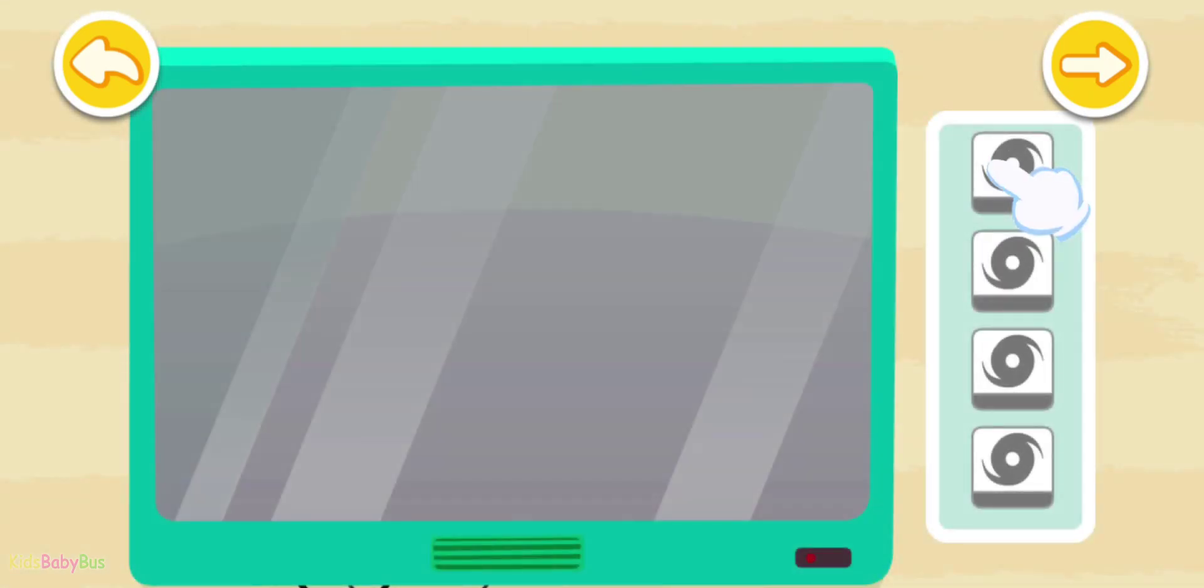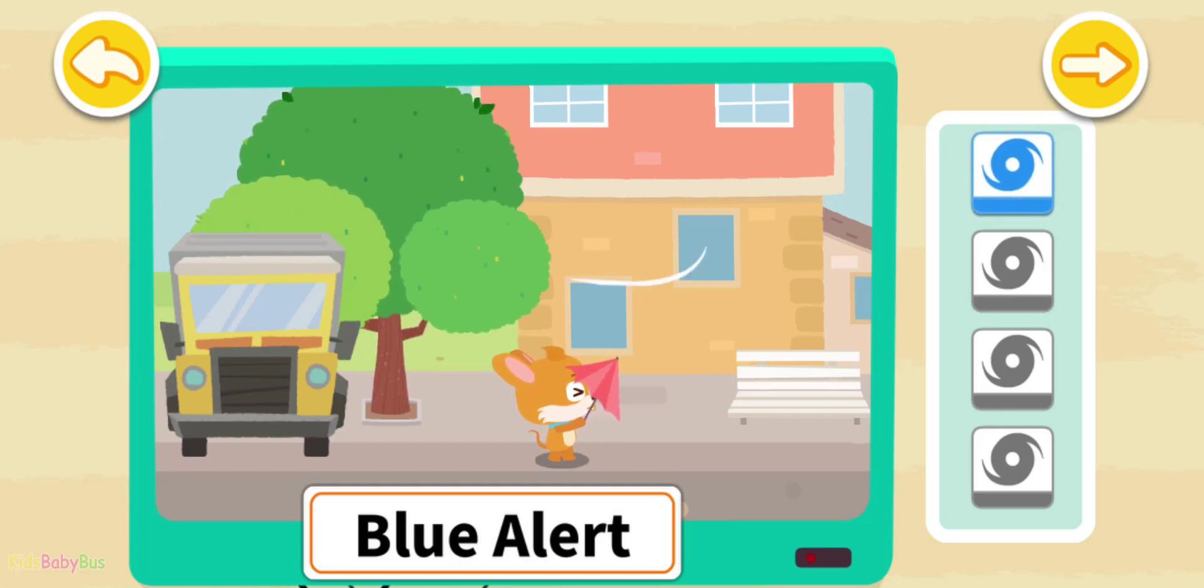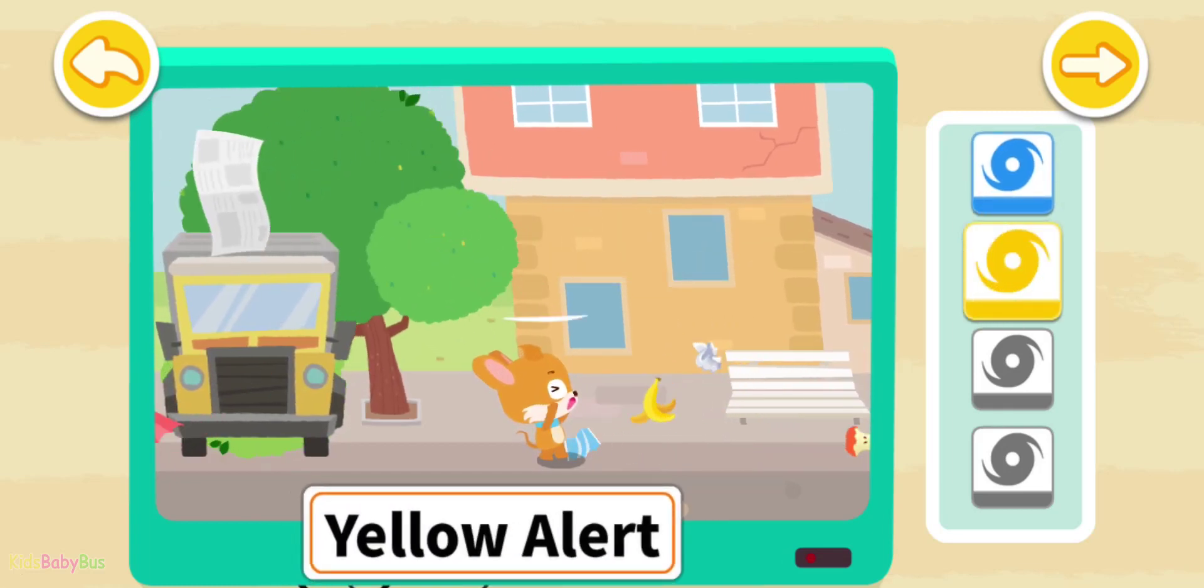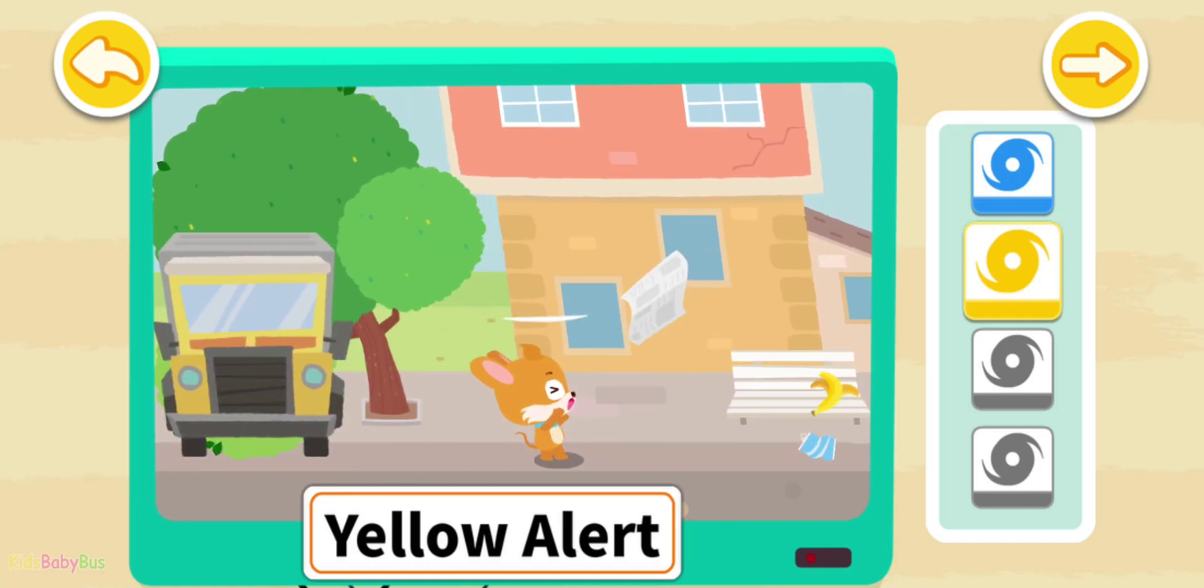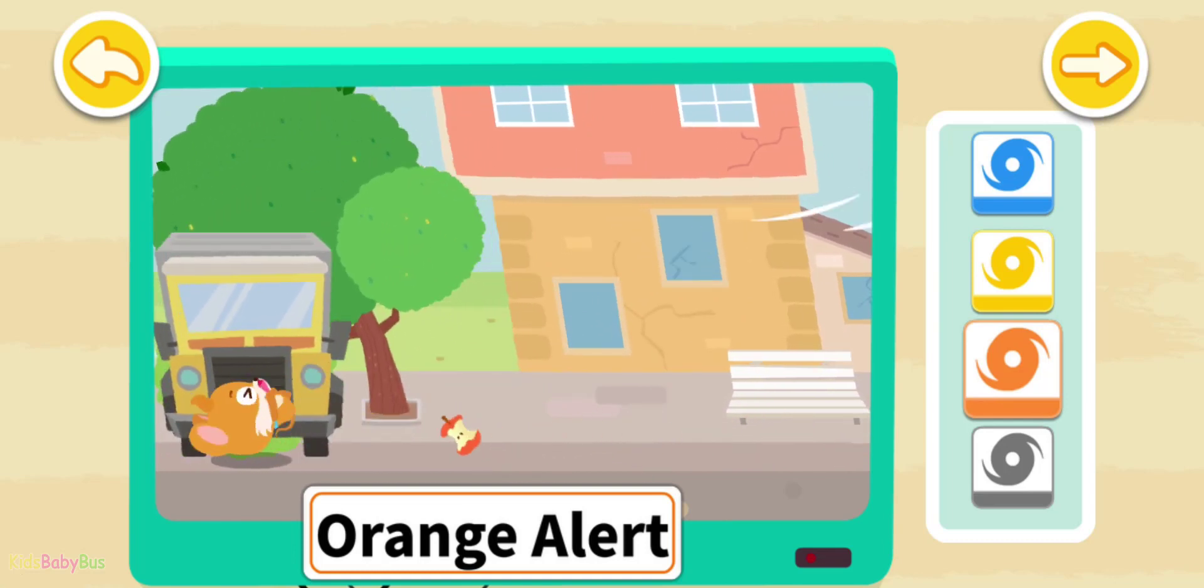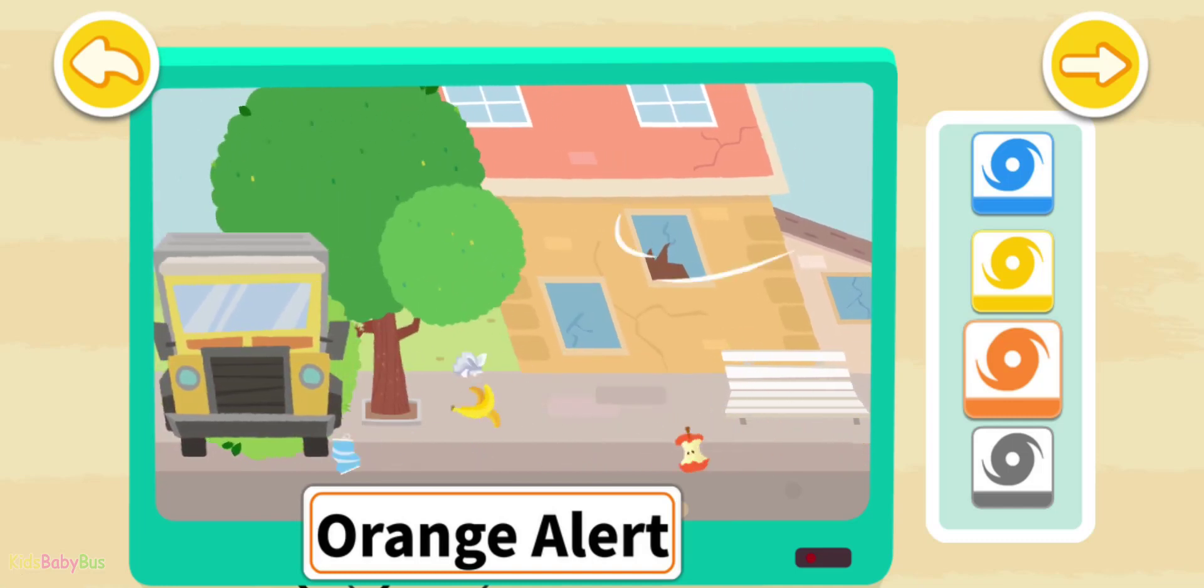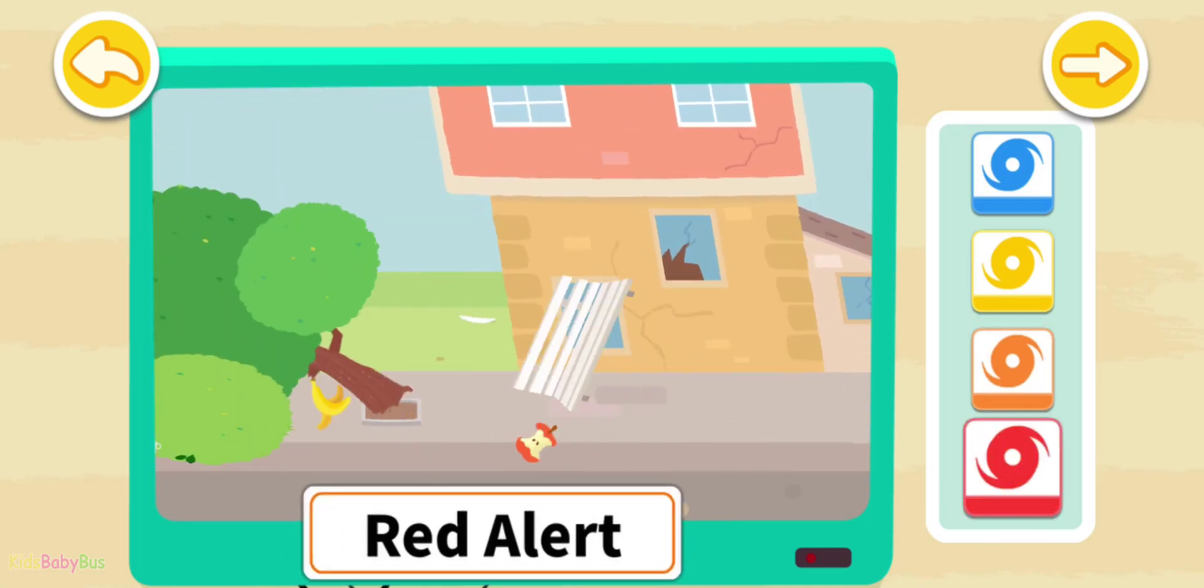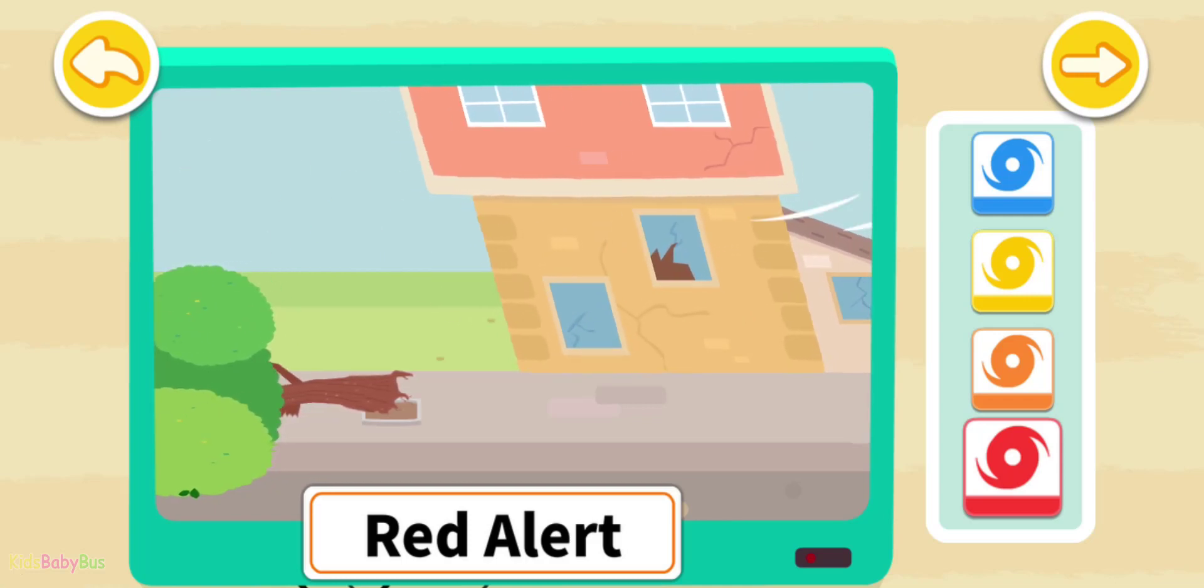Next, let's learn about hurricane warning signals. The blue alert means that walking outside can be difficult. The yellow alert means that the wind can stop you walking forward, and branches can be blown off. The orange alert means that you will be blown away if you go outside, and the window may be shattered by winds. The red alert means that big trees will blow down, and even cars can be blown away.